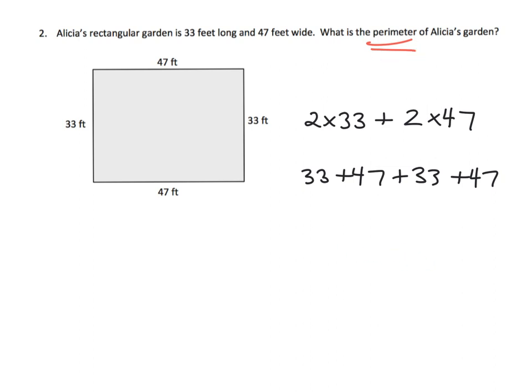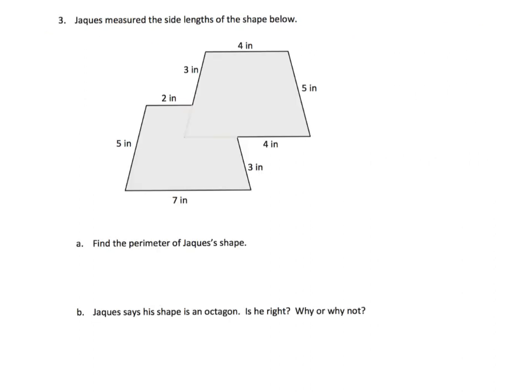And the last one for this video: we have Jaques, and he measured the side lengths of this shape here. Find the perimeter of Jaques' shape. So what are we going to do? Well, perimeter means you've got to find the sum of all the lengths of the outside.